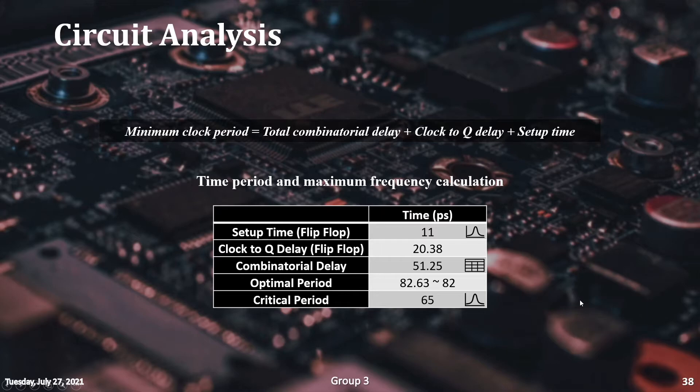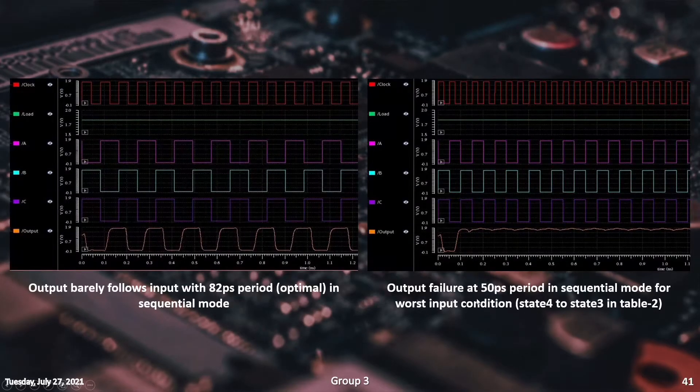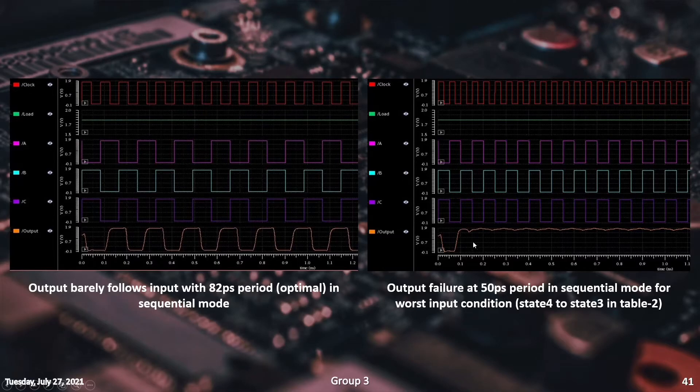Finally, the total minimum required period was calculated using this given formula. As we can see, when we go over the critical frequency of our CLB, the output becomes corrupted.